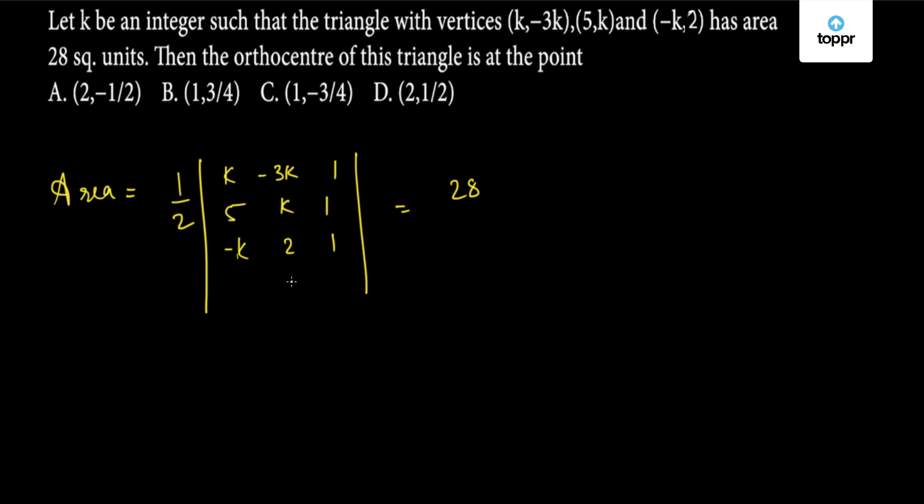Solving this we get a quadratic in k which is 5k² + 13k - 46 = 0. This can be factorized as (5k + 23)(k - 2) = 0. So we get k = -23/5 or k = 2. But since we've been told that k is an integer, we will discard this value. So the correct value is k = 2.